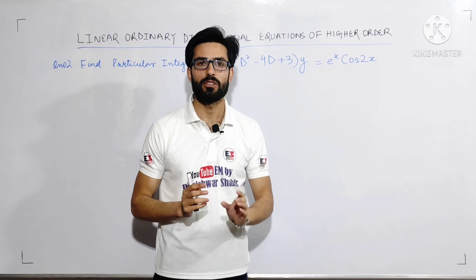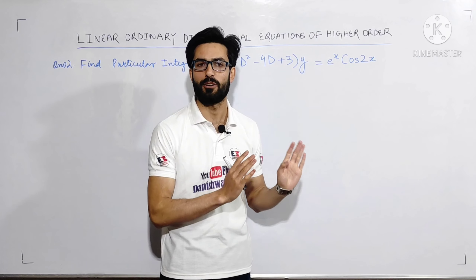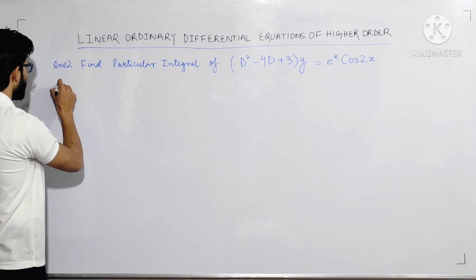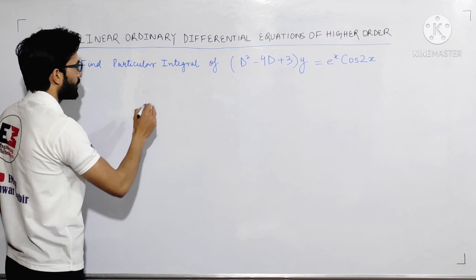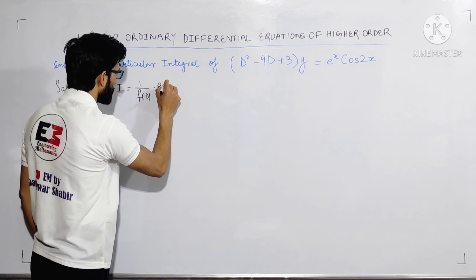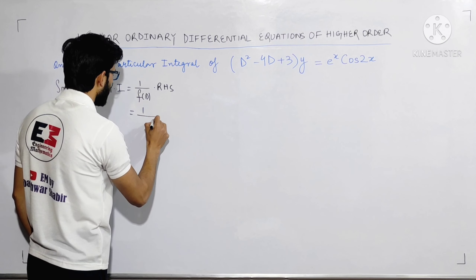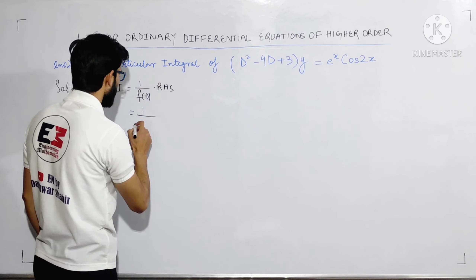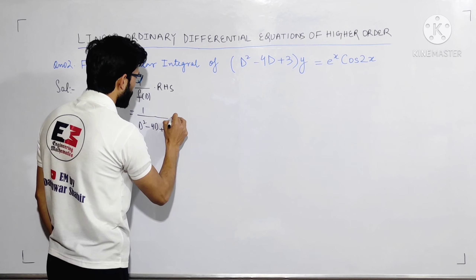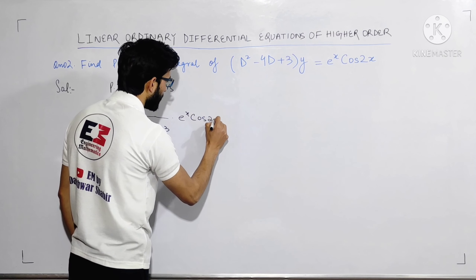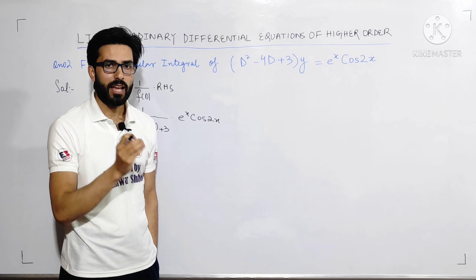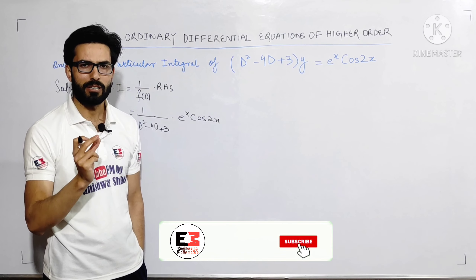So how do we solve the particular integral of this type of differential equation? In the solution, the particular integral (PI) is equal to 1 divided by f(D) into RHS. The RHS here is 1 over (D³ or D²−4D+3) into e^x·cos2x. The rule is: if the RHS has both an exponential function and a trigonometric function multiplied together, we apply a specific method.